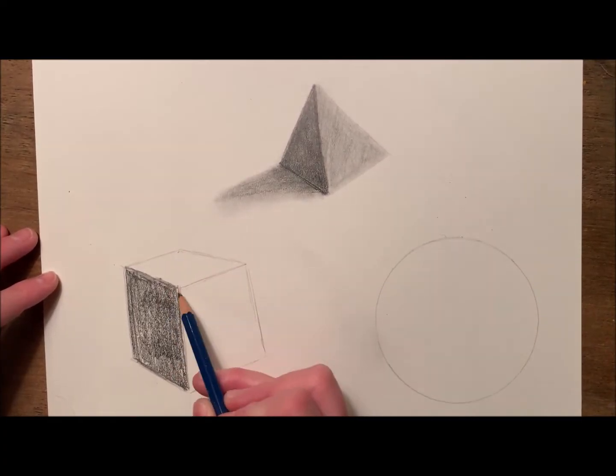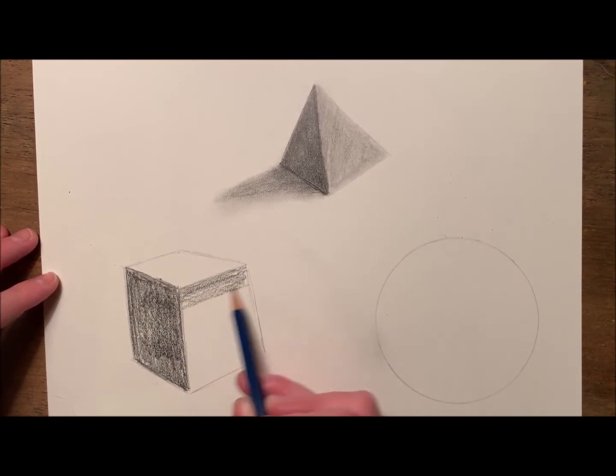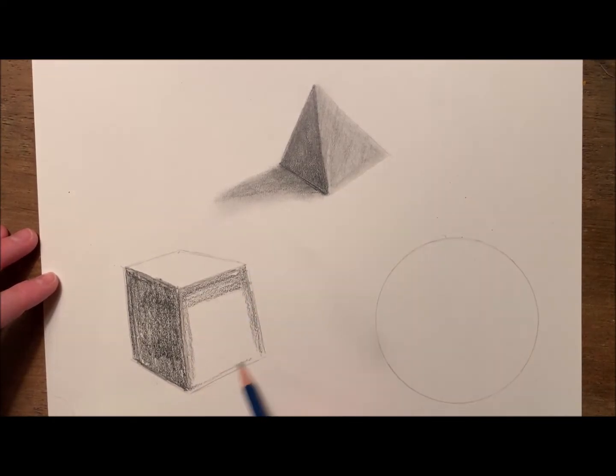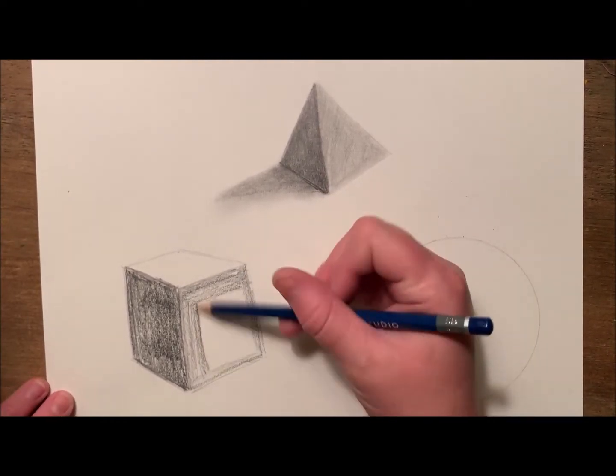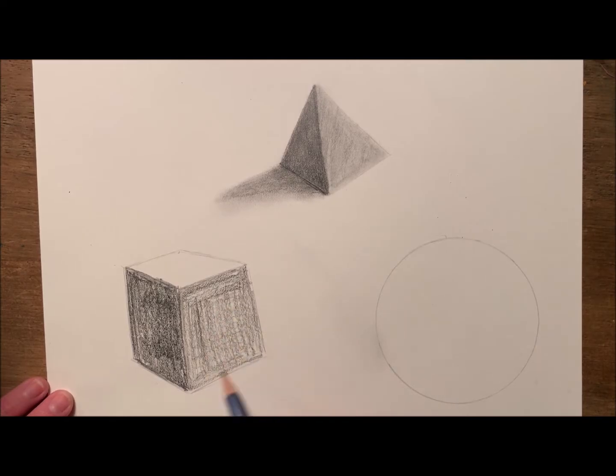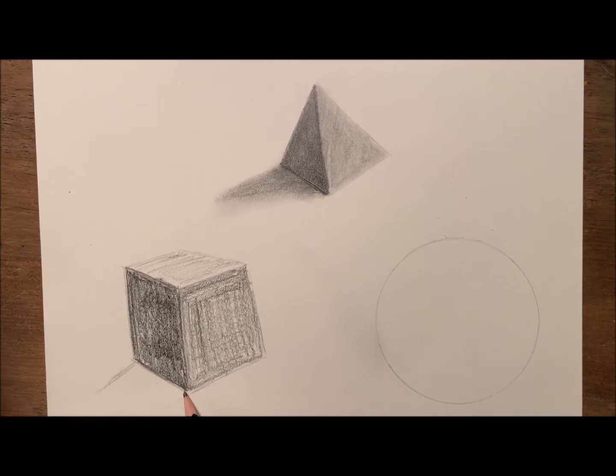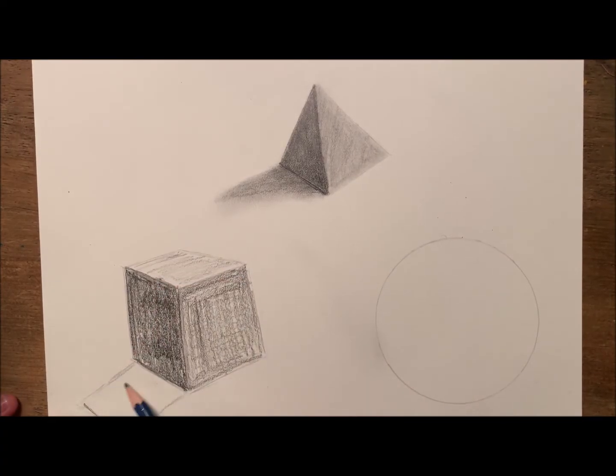Now for my right-hand side, I'm going to be using a medium value, so using a little less pressure and making it a little lighter. For the top, this will be my lightest side, so I simply shaded a tiny little bit. I'm also going to add a shadow, which again is just the stretched-out version of the shape that casts onto the floor.